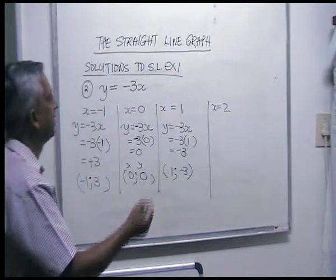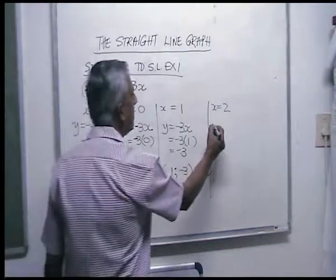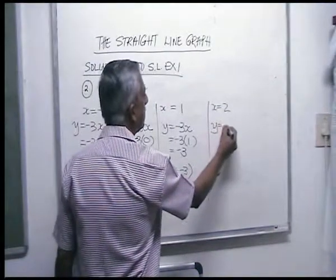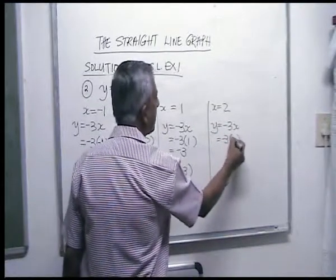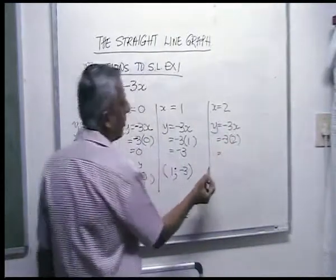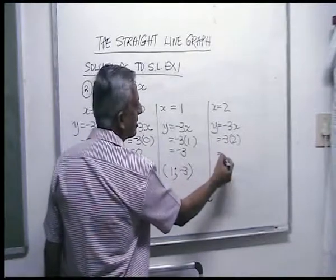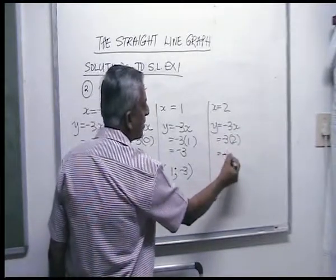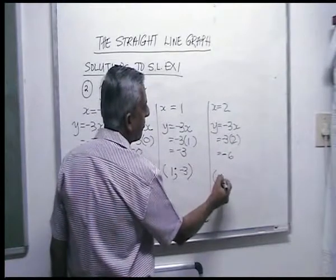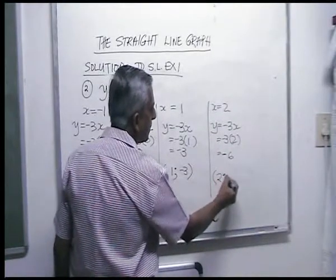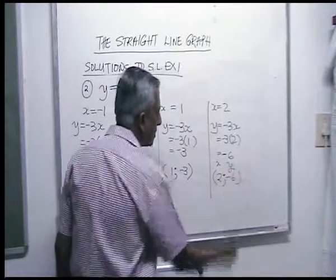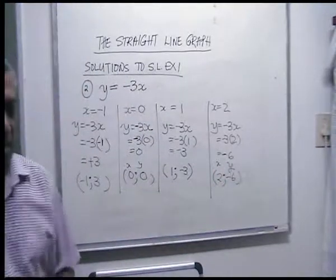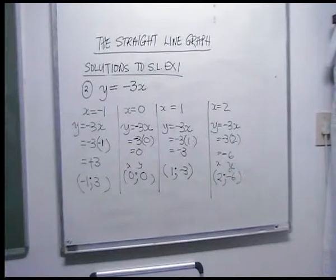Finally, if you chose x is two: y is equal to minus three times two. A minus times a plus gives you a minus, so three times two is six, and your final answer is two, minus six. The more examples you do, the stronger you get.